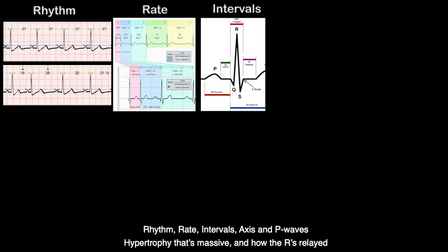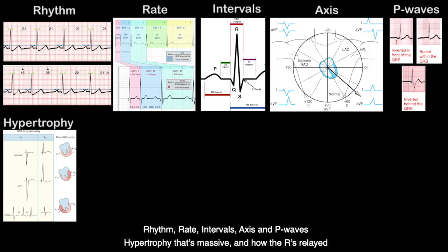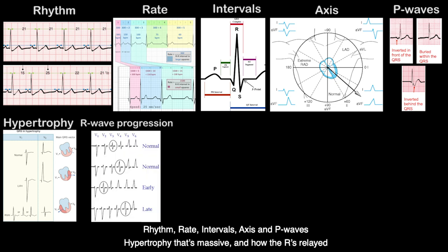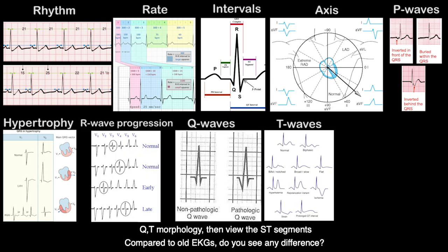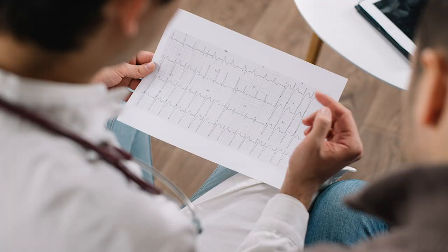Rhythm, Rate, Intervals, Axis, and P-Waves. Hypertrophy that's massive and how the R's relate. QT morphology then view the ST segments. Compared to old EKGs, do you see any difference?